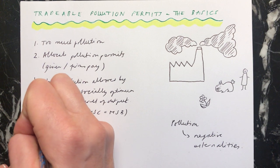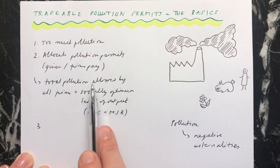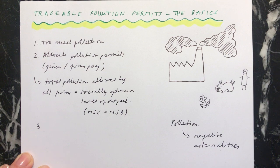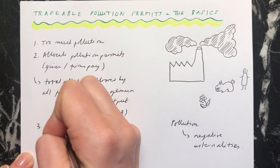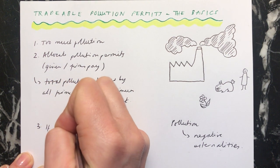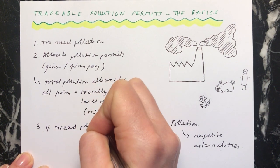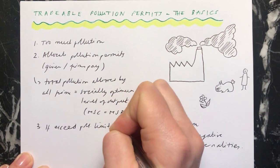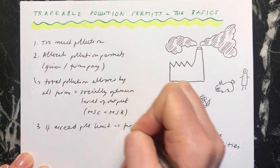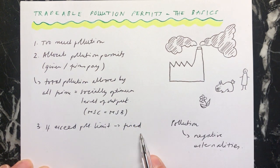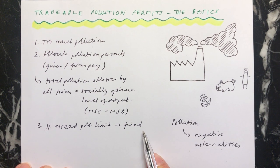So if the firms go over their allocated amount of pollution, then they will be fined. If they exceed the pollution limit, they're fined. And this is a disincentive — it means they are less likely to want to be polluting because they don't want to have to pay the fine.